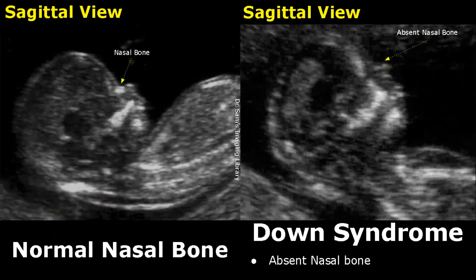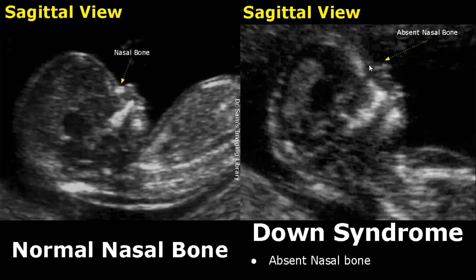In this image we see a normal nasal bone — this hyperechoic bone right here. And in this image we have an absent nasal bone; we do not see a hyperechoic bone. This is another soft marker for Down syndrome.